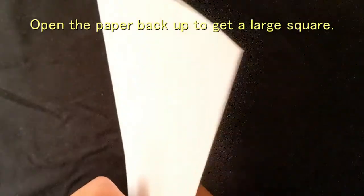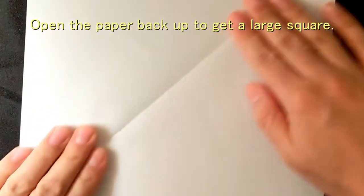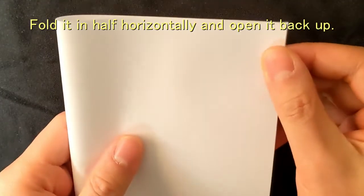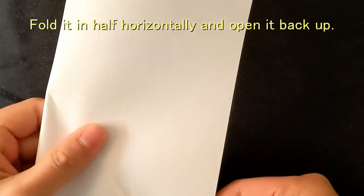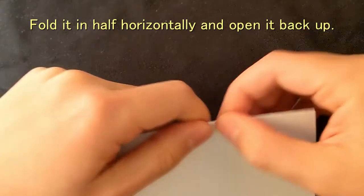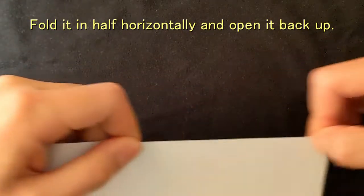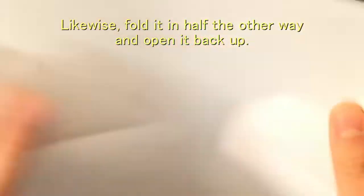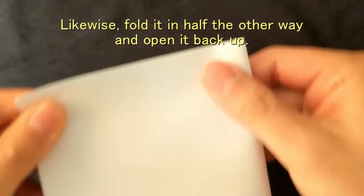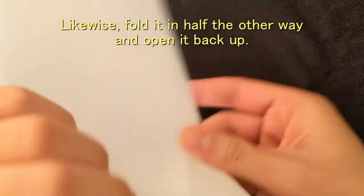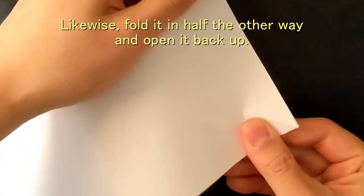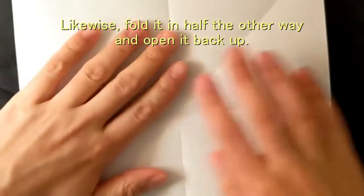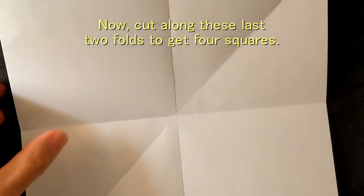Open the paper back up to get a large square. Fold it in half horizontally and open it back up. Likewise, fold it in half the other way and open it back up. Now cut along these last two folds to get four squares.